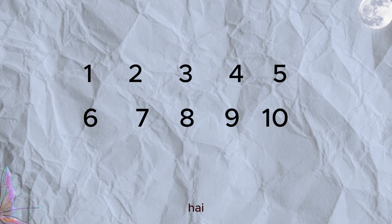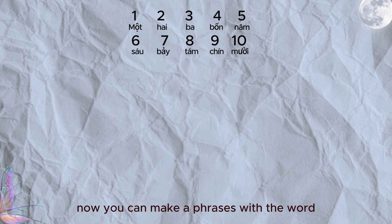Một, hai, ba, bốn, năm, sáu, bảy, tám, chín, mười. Now you can make a phrase with the word number plus a real number.